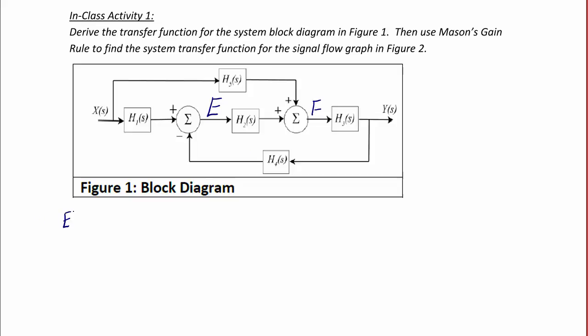And we'll label the output of this summer F. So equation E is equal to XH1 minus YH4. We're going to lose the s in the parentheses just for efficiency's sake. And F is equal to EH2 plus XH5. We're going to label equation E1 and equation F2. And we're going to substitute equation E1 into equation E2.